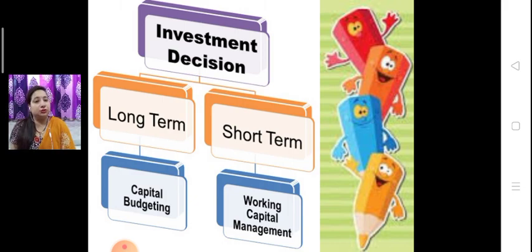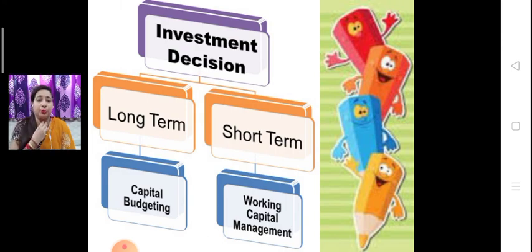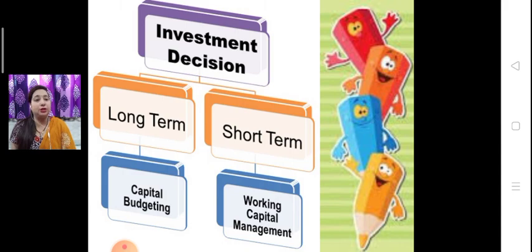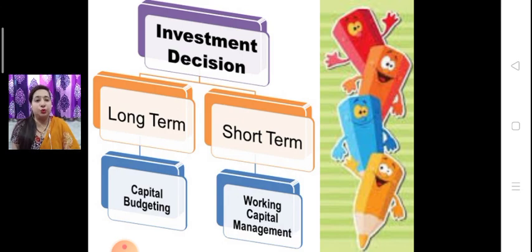We have two platforms — long term or short term — that we have to invest on. Long term is called capital budgeting, meaning if we invest our money in fixed assets, it is known as capital budgeting or long term decision. And if we invest in working capital management, meaning current assets, to fulfill the day-to-day requirements of a company, it is known as working capital, and it is also known as short term decision.